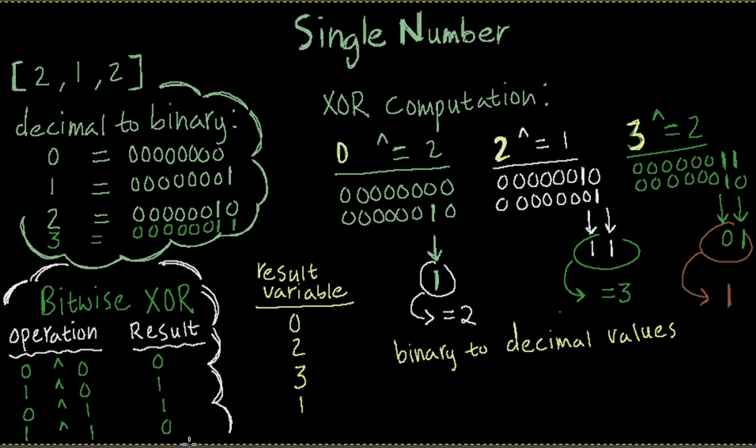And the other idea is that if anything is XOR with 0, it returns itself. So for that reason, we start off with the result variable 0. And what we do is compare the first element in our array, which is 2, with the 0. So 0 XOR 2 would result in itself. That means it would return 2.